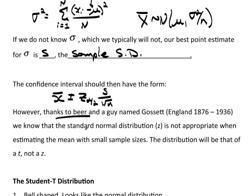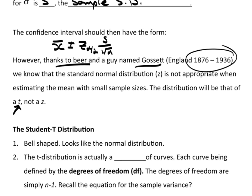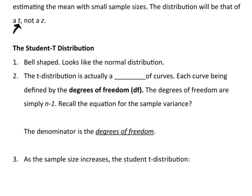Thanks to beer and a guy named Gossett, who worked for the Guinness Brewery back in England during that time period, we know that the standard normal distribution z is not appropriate when estimating the mean with small sample sizes. The distribution will be that of a t distribution, not a z. Small sample sizes, when we're dealing with s rather than sigma, do not actually follow a z; they follow a t distribution.